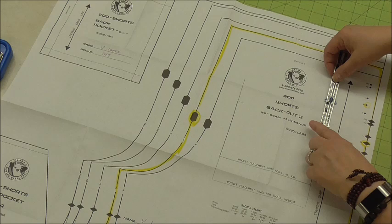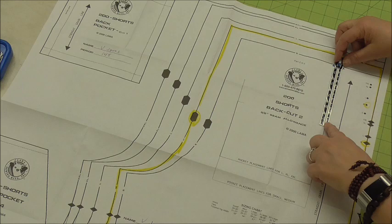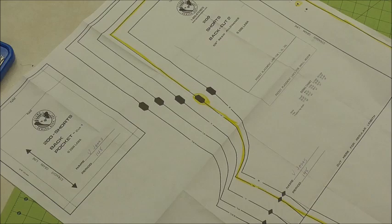So I'm going to take my seam gauge and lay it right there. For the small, it is at five and one-fourth inches. So I'm actually going to write that on my paper.